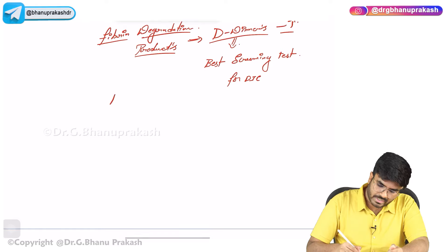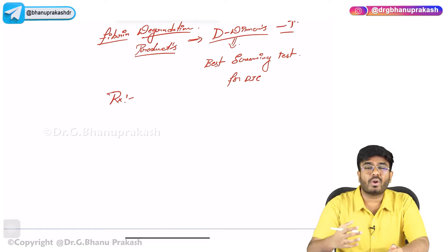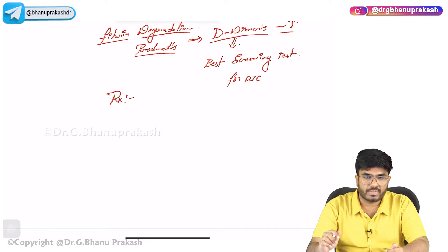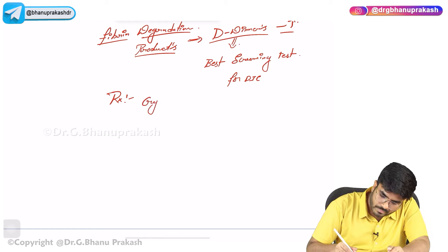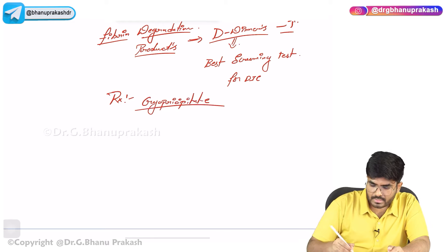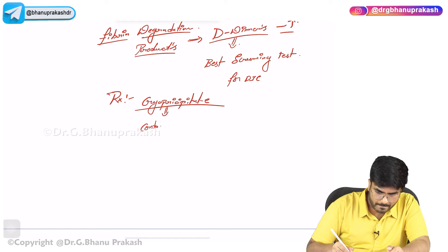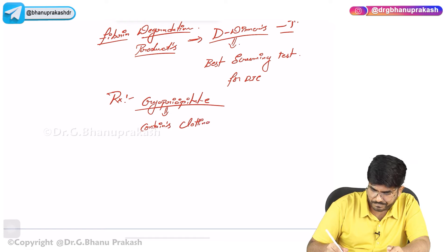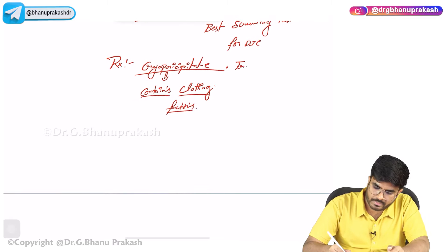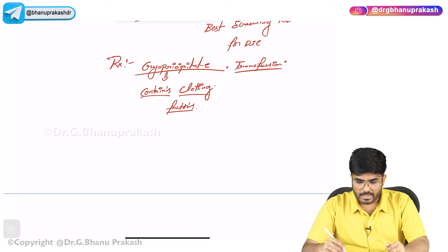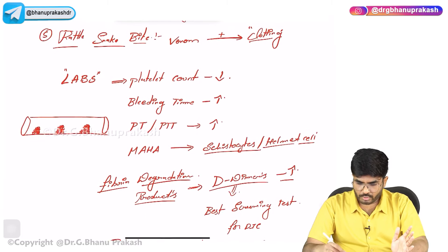What is the treatment for DIC? Since it is a consumptive coagulopathy, clotting factors are getting consumed and their levels are going down, so PT and PTT are elevated. You need to replace the clotting factors — give the patient cryoprecipitate, which contains clotting factors. You can also give platelet transfusions. Cryoprecipitate and platelet transfusions are the treatments.